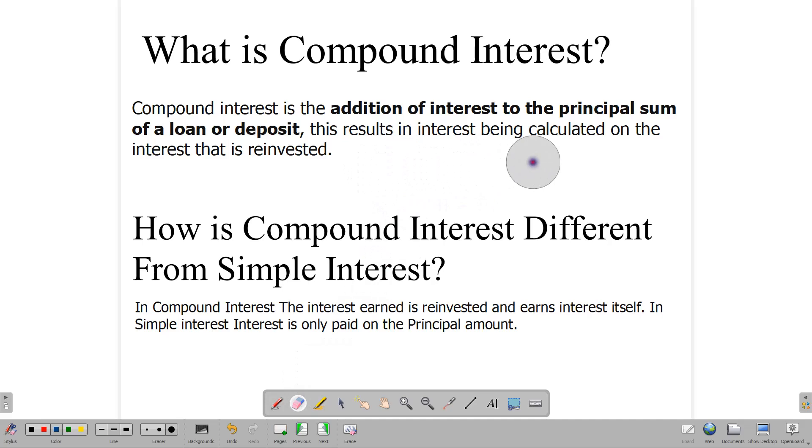So, in compound interest, the interest that is earned is added to your principal, and that creates a new principal. And so, your principal and your interest generate interest. But in simple interest, when you invest a certain amount of money, your interest is calculated on the exact money that you invested or the exact money that you borrowed and does not have anything to do with the interest that you get. Those are not added back to it to get a new principal. So, they're very different.